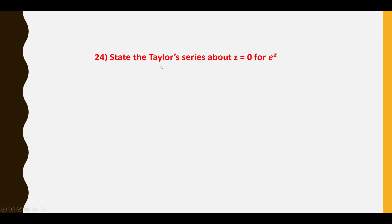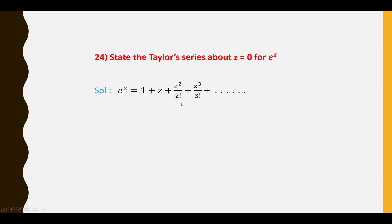Twenty-fourth question: State the Taylor series about Z = 0 for e^Z. e^Z = 1 + Z + Z²/2! + Z³/3! + ··· This is the Taylor series for e^Z.